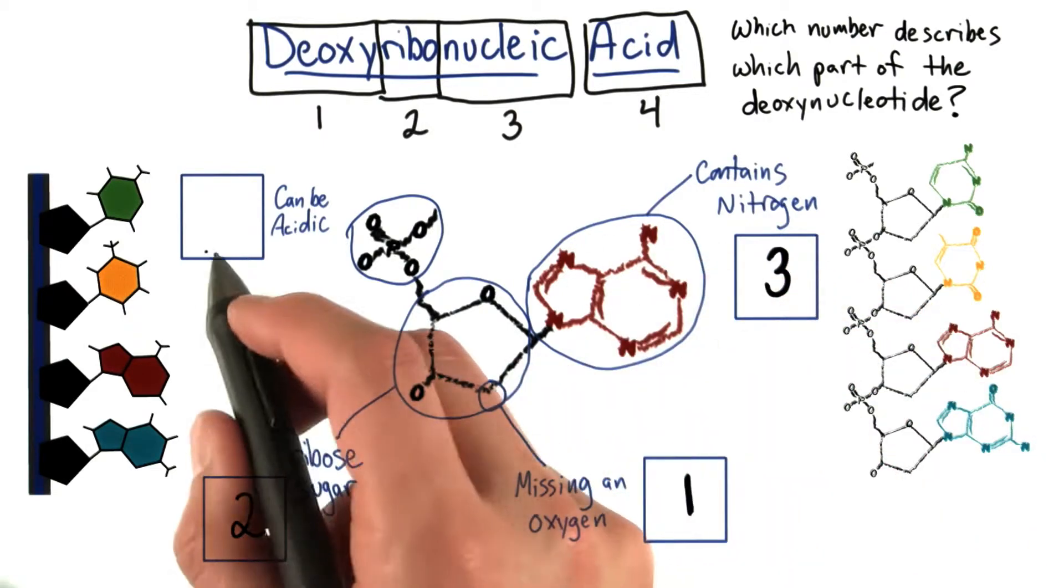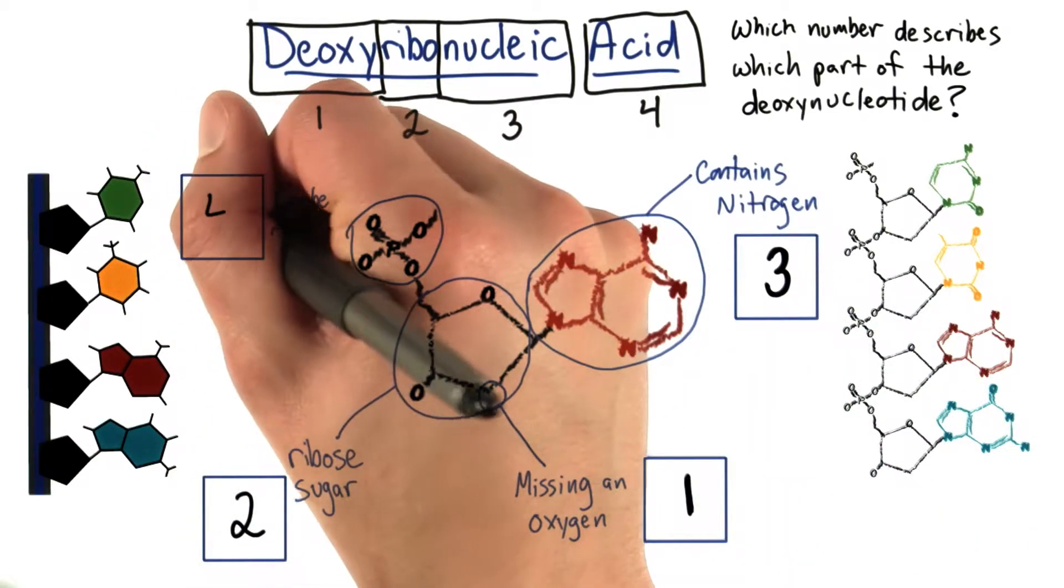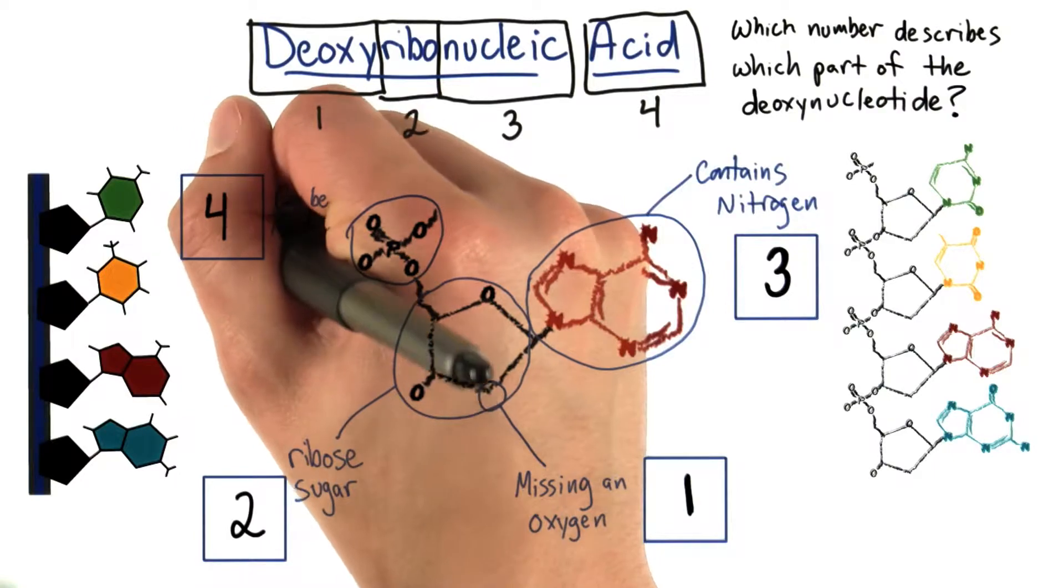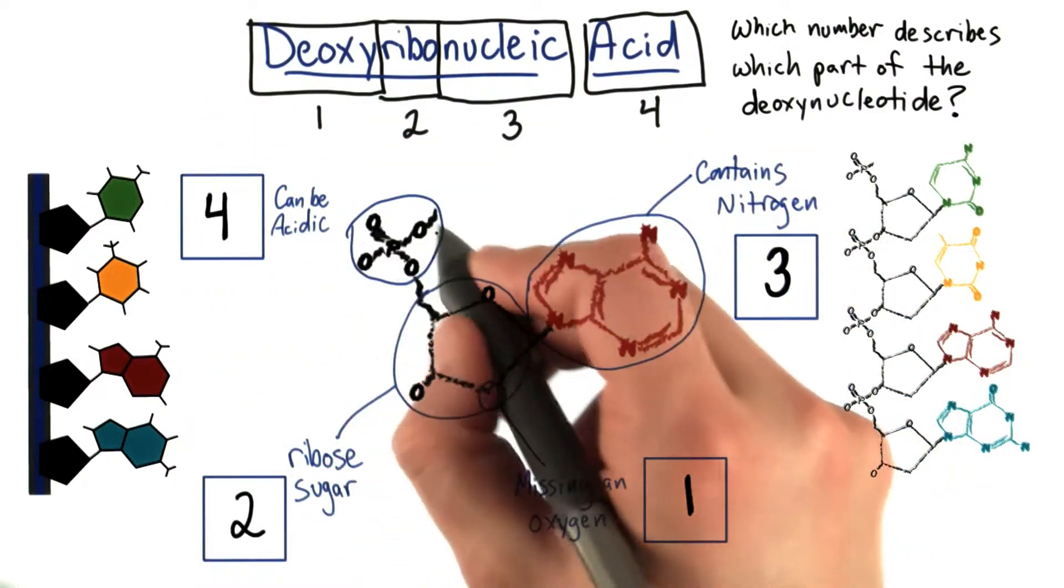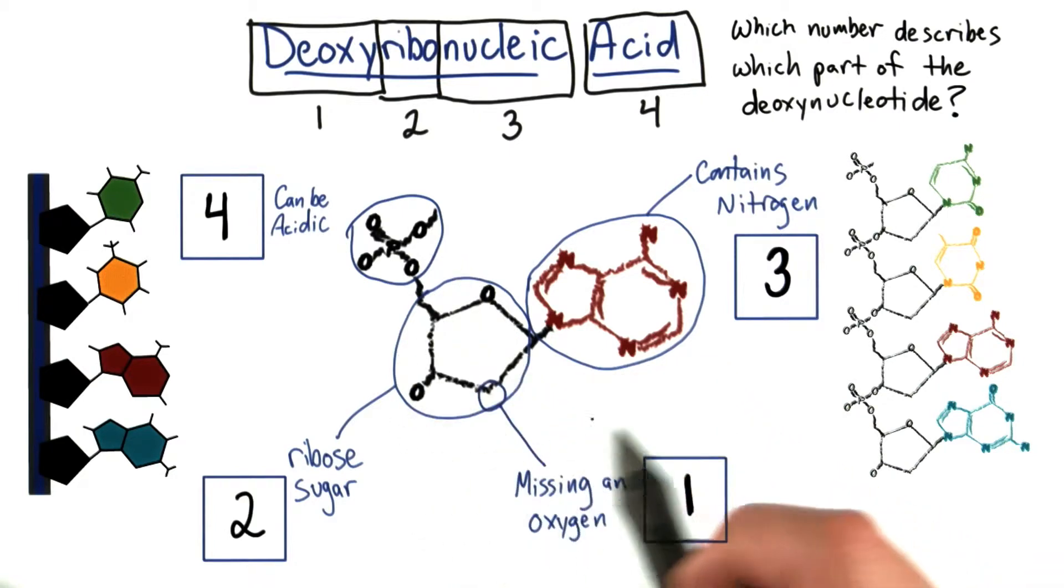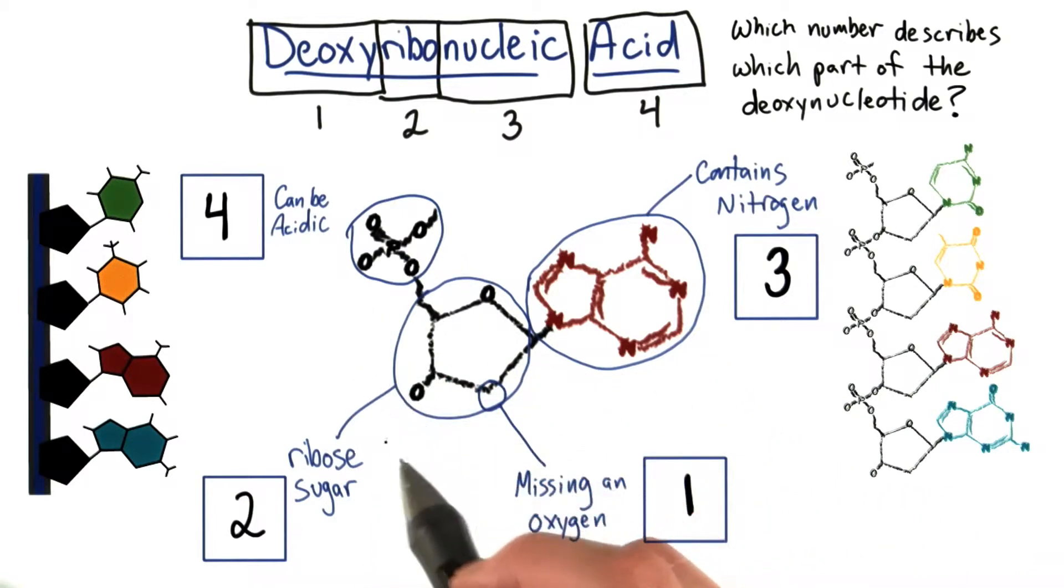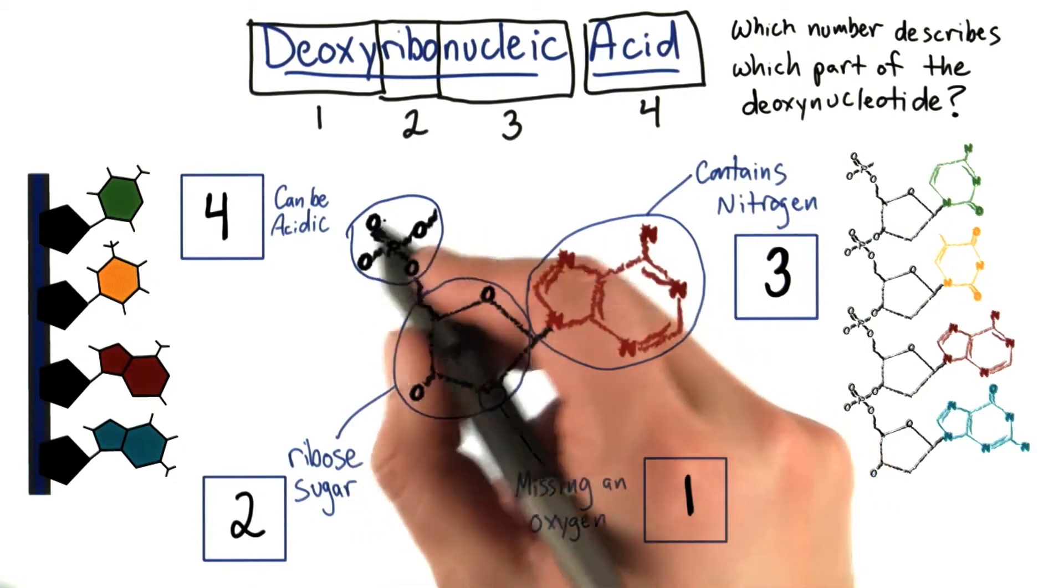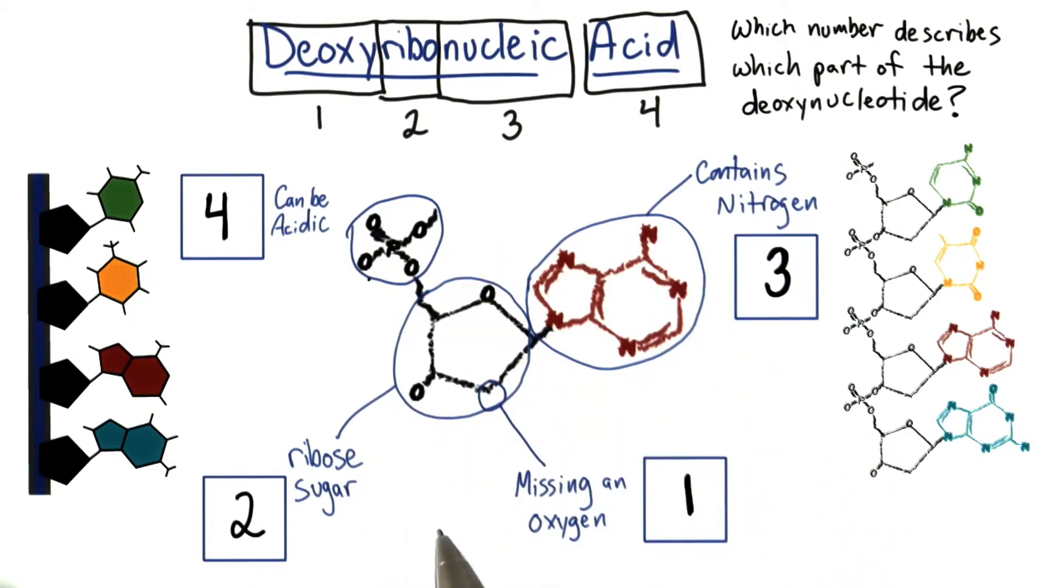And then the last bit, actually over here, the acid is an artifact from this, what we call a phosphate group right here. Under certain conditions when DNA was first isolated, it actually had acidic properties, and it's because of the nature of this group right here.